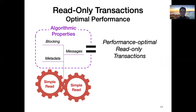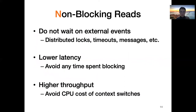We define performance-optimal read-only transactions to be those that have the least of these sources of overhead. More precisely, we say performance-optimal read-only transactions are those that match the N, O, and C properties that capture the lowest possible overhead for each mechanism. The N property captures the minimum possible blocking — no blocking at all. Read-only transactions are non-blocking if they do not wait on external events like logs or timeouts. Non-blocking transactions have better performance: lower latency because they avoid time spent blocking, and higher throughput because they avoid the CPU overhead of context-switching.